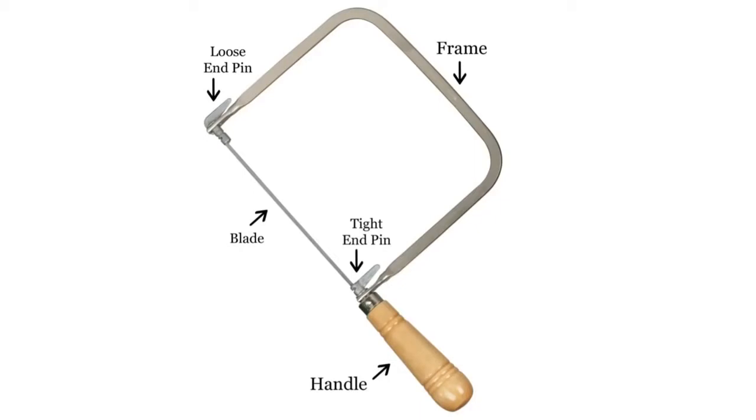a tight end pin that should remain secure at all times, a blade that has teeth that will point out away from the saw and down towards the handle, a loose end pin that will move freely without the blade, and a metal frame.